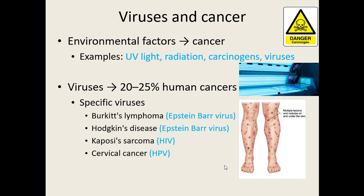There are many environmental factors that can cause cancer by messing with DNA — UV light, radiation, and carcinogens. Viruses are another environmental factor linked to around 20–25% of all human cancers. Specific examples: Burkitt's lymphoma and Hodgkin's disease come from the Epstein-Barr virus; Kaposi's sarcoma from HIV; cervical cancer from HPV (human papillomavirus). Luckily, we're developing vaccines against some of these viruses, which means we can ultimately vaccinate against those specific cancers and potentially eliminate 20–25% of all human cancers.